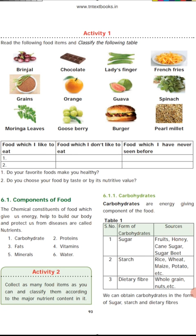The first one is carbohydrate. Carbohydrates are energy-giving food. We can obtain carbohydrates in the form of sugar, starch, and dietary fibers. For sugar, examples are fruits, honey, and sugarcane. For starch: rice, maize, and potato. Dietary fibers are found in whole grains and nuts. Carbohydrates are energy-giving components of food.